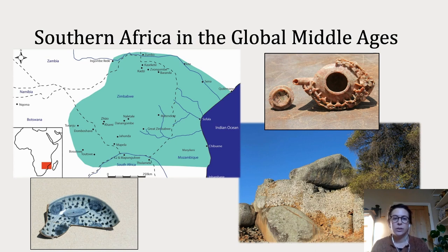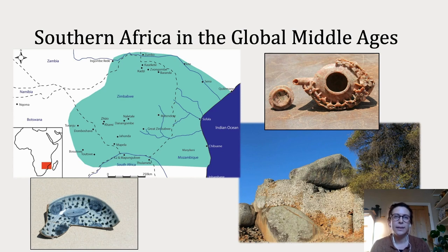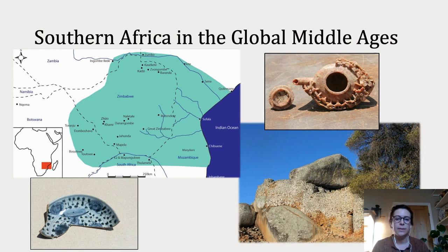These networks involved the exchange of copper, salt, agricultural produce, ivory, and many other goods. We also see evidence of trade networks that linked southern Africa to other parts of the Indian Ocean from as early as 700 AD. This material evidence is predominantly, in the early stages, in the form of glass beads that were manufactured in Asia, the Middle East, and other regions.